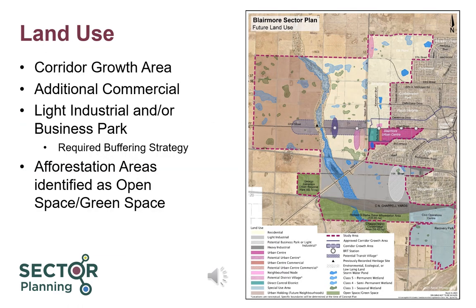The Sector Plan amendment includes a future extension of bus rapid transit further west down 22nd Street. With this extension comes the opportunity for a new corridor growth area that will include denser, or mixed-use forms of development along and near the transit corridor. This is part of an overall increase in density for future development in the sector. Additional commercial lands are proposed immediately west of the existing Blairmoor Urban Centre. Light industrial is proposed between the CP and CN rail lines. Due to the presence of the adjacent Montgomery Place neighbourhood, a buffering strategy will be required for any concept plan proposing light industrial near existing residential areas.